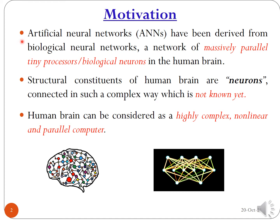Artificial neural networks, or ANNs in short, have been derived from biological neural networks. It is a network of massively parallel tiny processors — billions of neurons are there in our human brain. These small neurons are known as tiny processors, or biological neurons. The structural constituents of the human brain are neurons, and they are connected in a very complex way.